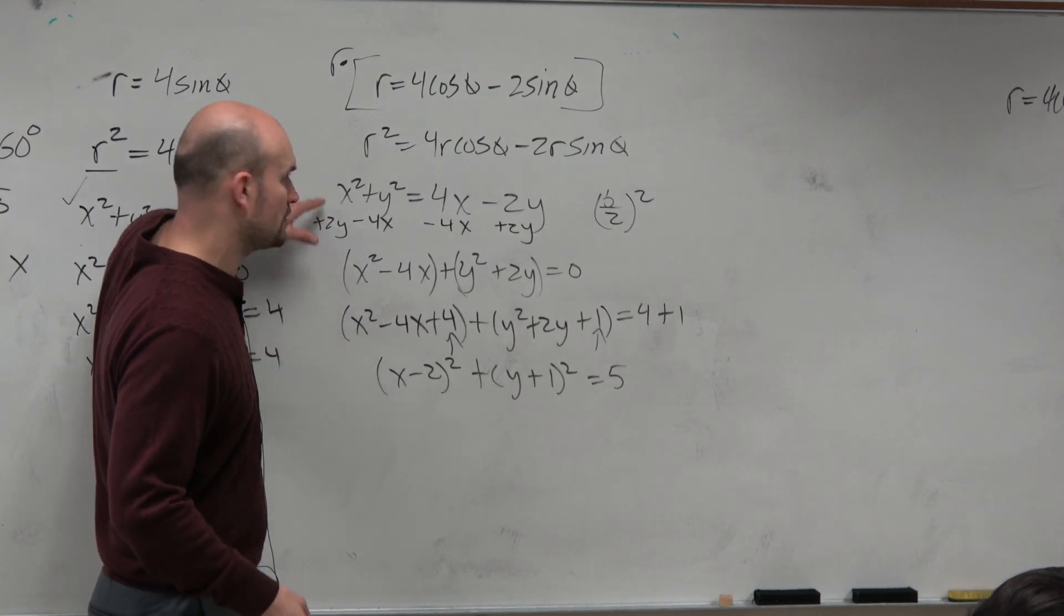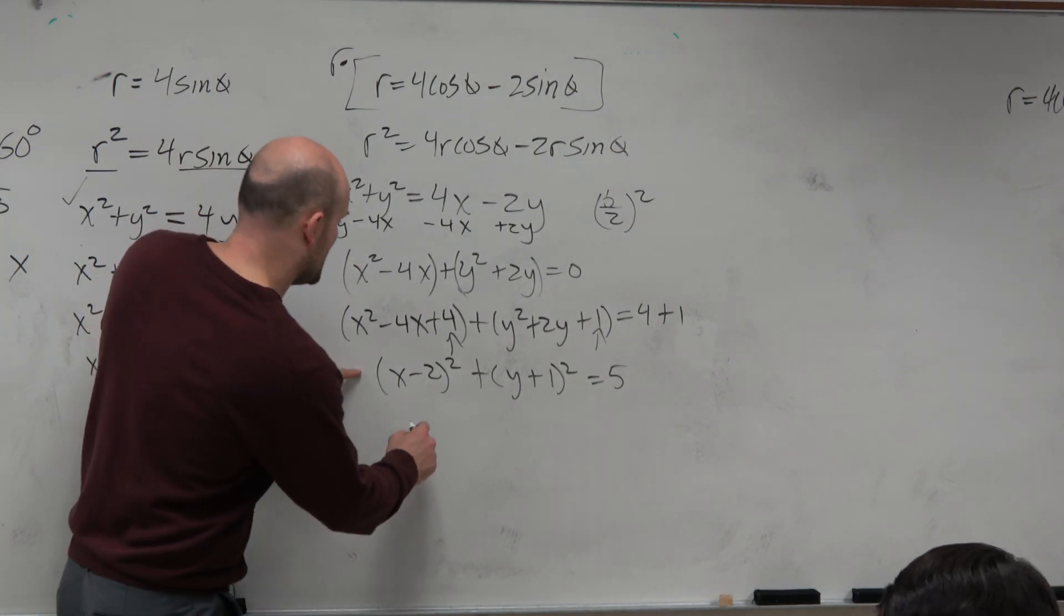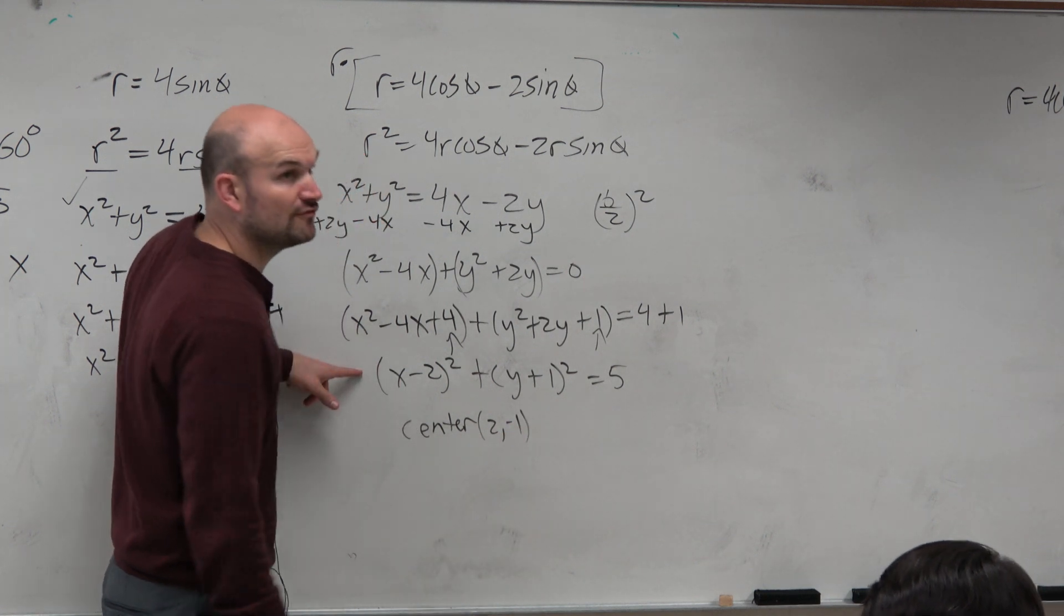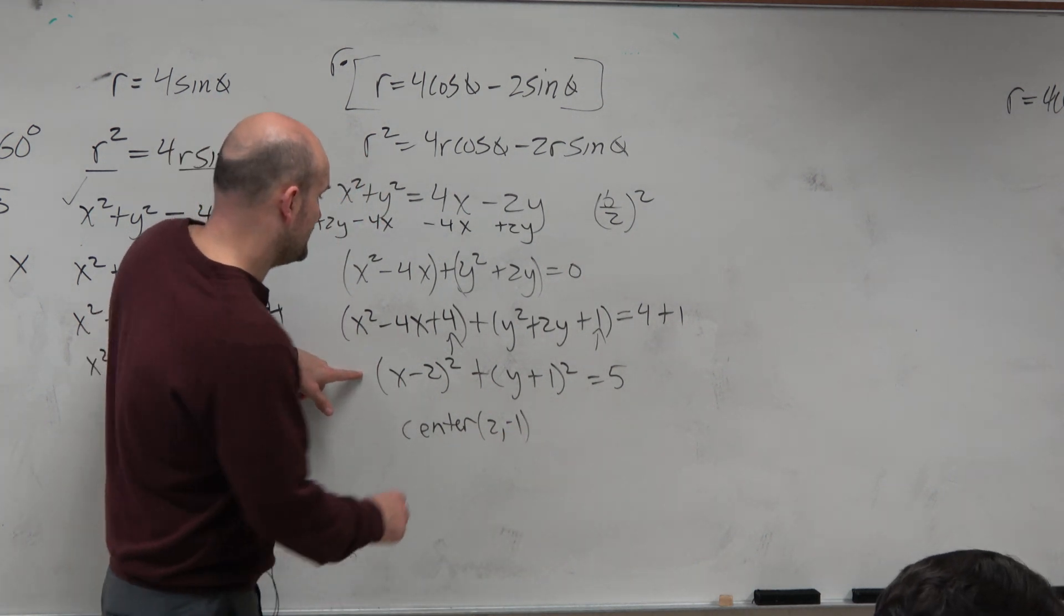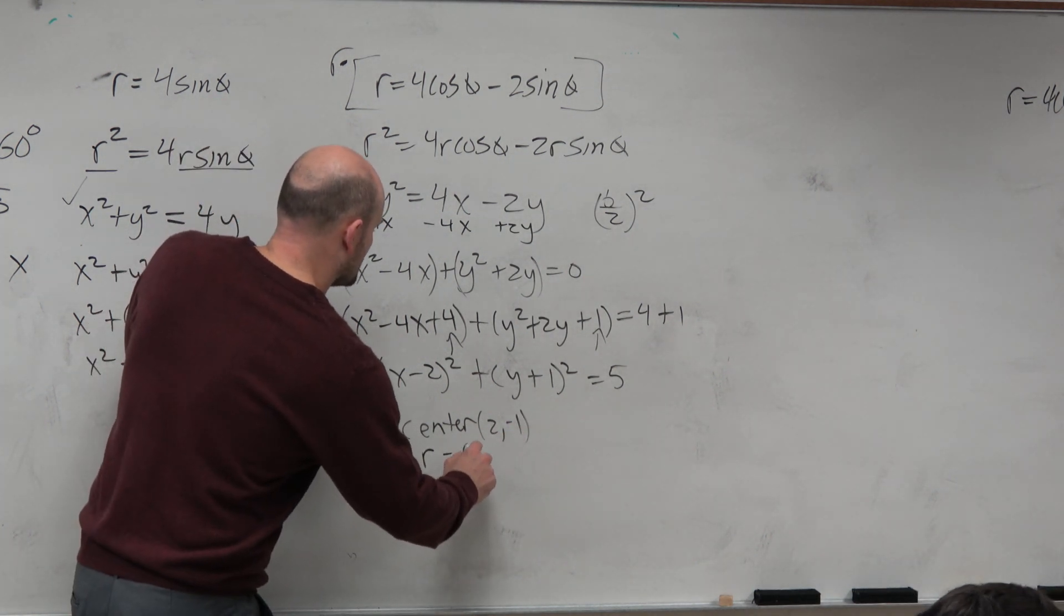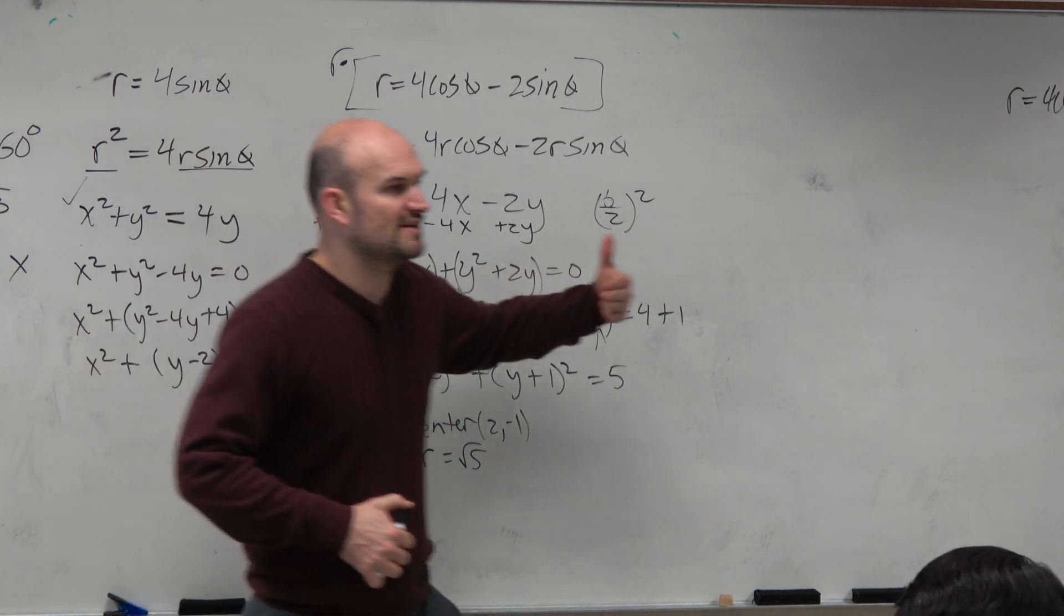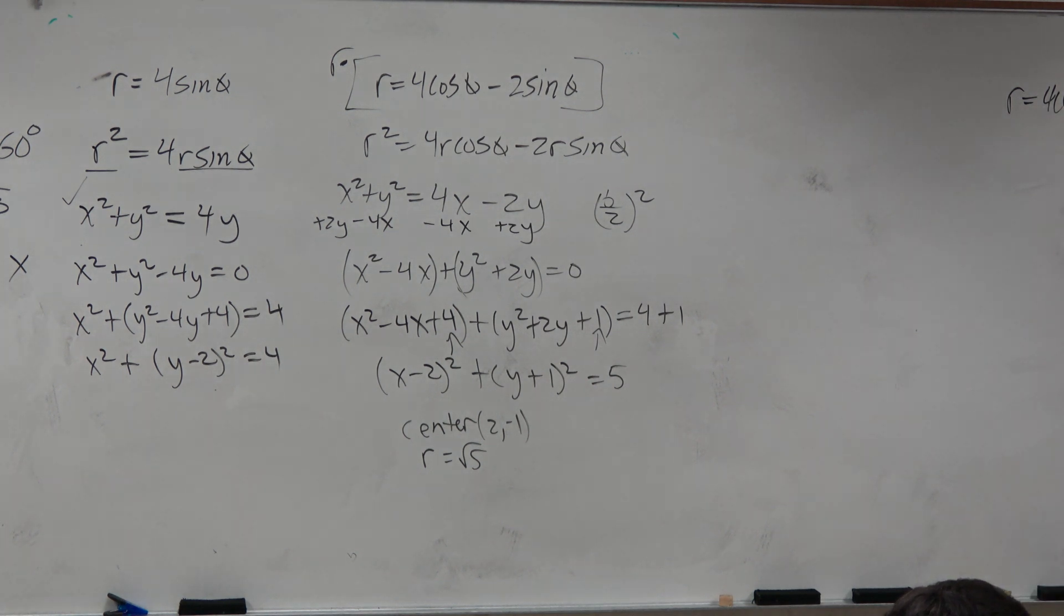So this is x minus 2 quantity squared plus y plus 1 quantity squared equals 5. The reason why this form is preferred over this form is because we can tell you what the center is, 2, negative 1, based on the formula I gave you last chapter. And we could also say what the radius is, which is the square root of 5.